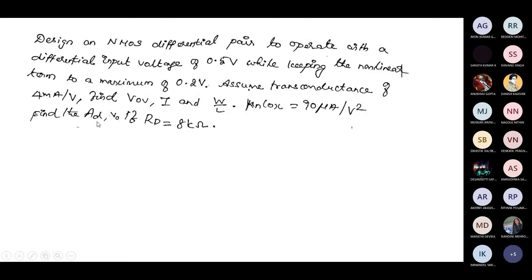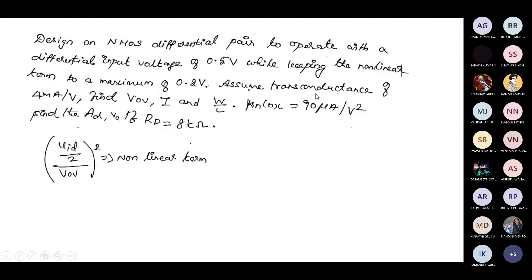Find the overdrive voltage, bias current, width-to-length ratio, and differential gain. The differential gain for the double-ended case is GM times RD, and for the single-ended case it is GM times RD by 2. To find overdrive voltage, equate the non-linear term — which equals VID by 2 divided by overdrive, whole squared — to 0.2, and substitute the given VID of 0.5 volt to solve for overdrive.